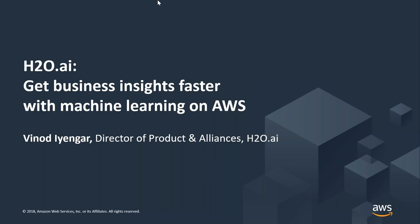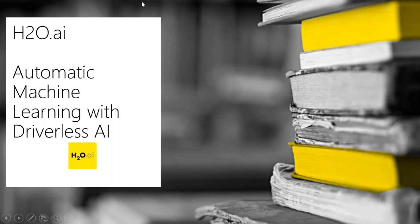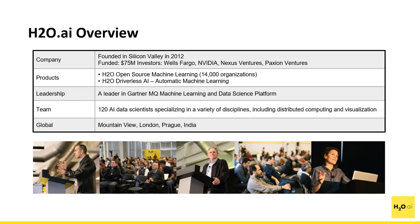Thank you, Chris. Hello, all. Thank you for the opportunity to present. I'm Vinod Iyengar and I head product and alliances here at H2O. I've been with the company for a little more than three and a half years. Today the topic is automatic machine learning with Driverless AI — that's our new product. For folks who don't know H2O — quick overview. We were founded in 2012, so we've been in business more than six years. We are the creator of the open source platform, also known as H2O, and nearly 14,000 organizations globally use us in various forms.